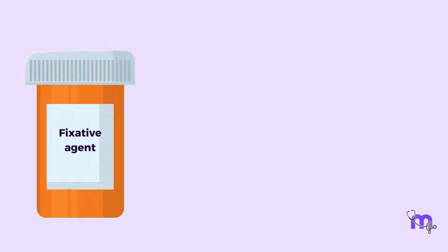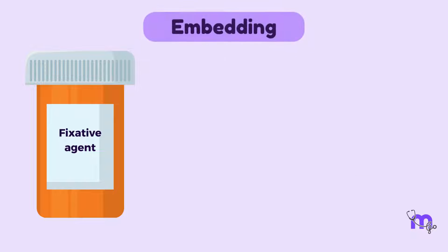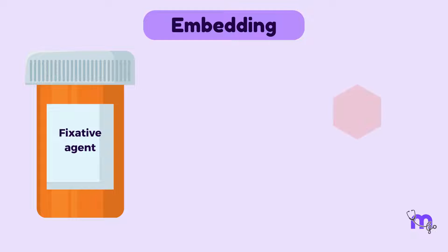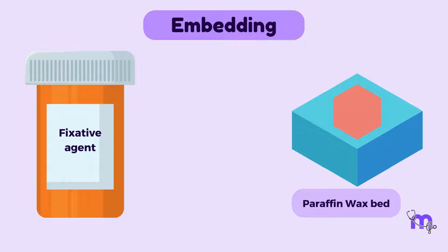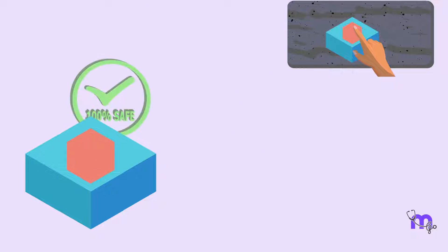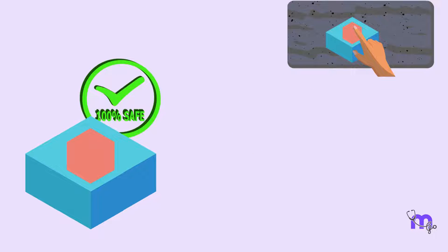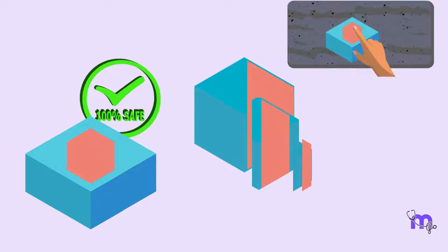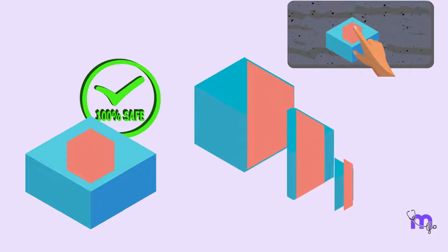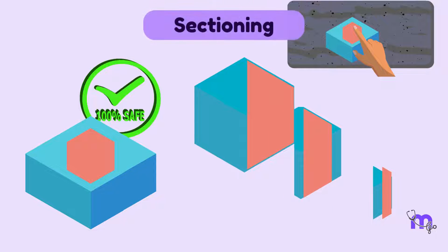The next step is called embedding, which is the process of inserting the fixed tissue into a paraffin wax bed. The wax hardens around the tissue to form a block. Now that the tissue is safe within a block of wax, it is easier to section it into thin slices using a technique called sectioning.